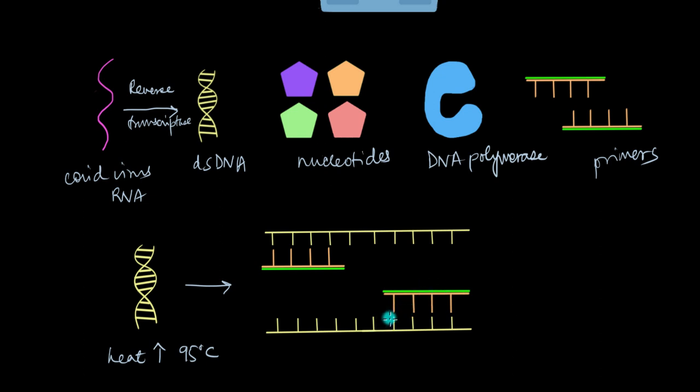And primers are essentially short pieces of DNA. And like I said, they find the complementary bases on this viral DNA and attach to them. So the DNA strands separate, primers come in, they bind and attach themselves to their complementary bases on the viral DNA.